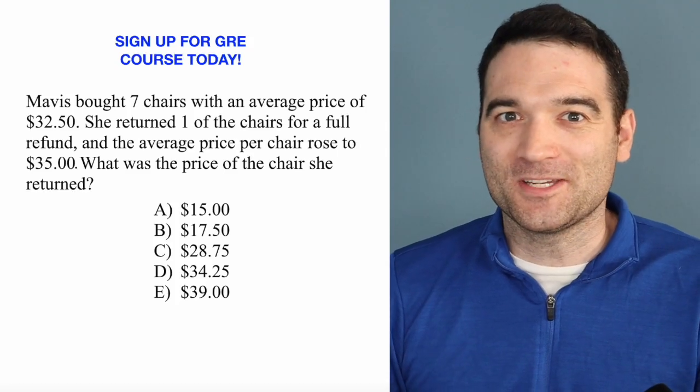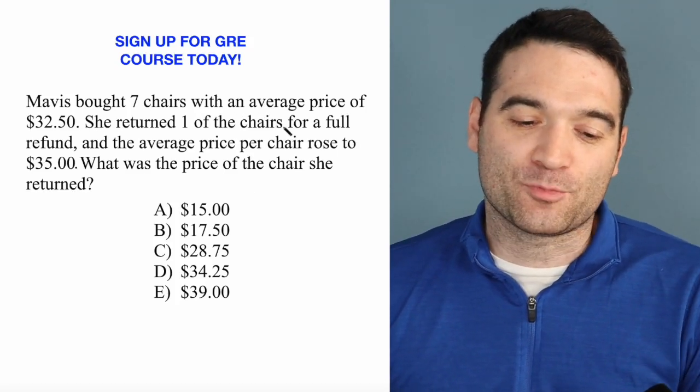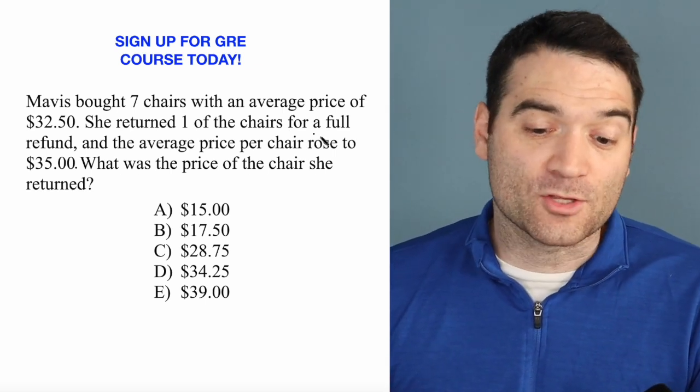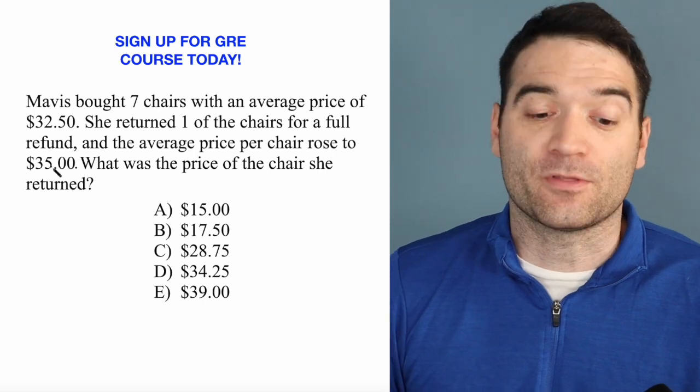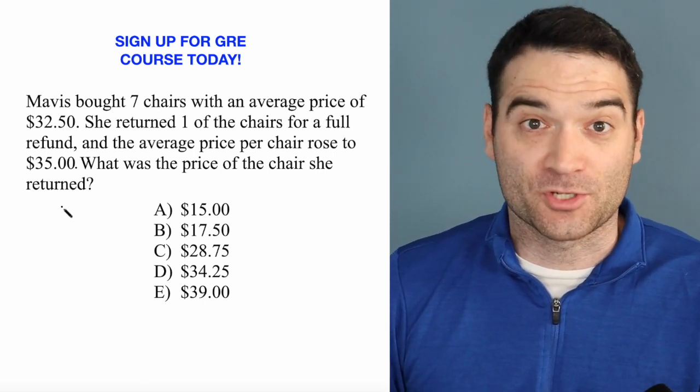Here's a GRE arithmetic question. Let's take a look. Mavis bought seven chairs with an average price of $32.50. She returned one of the chairs for a full refund, and the average price per chair rose to $35. What was the price of the chair she returned?